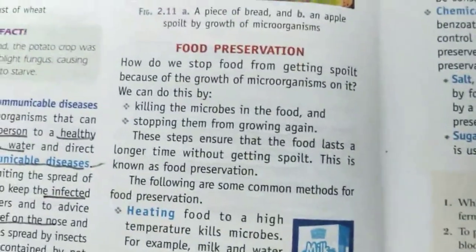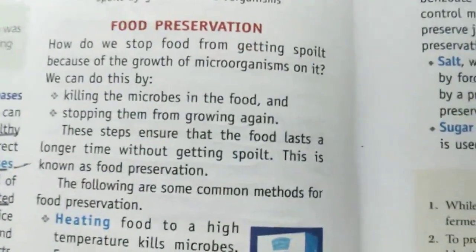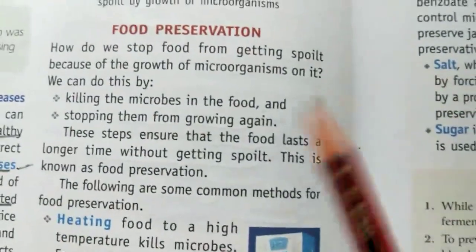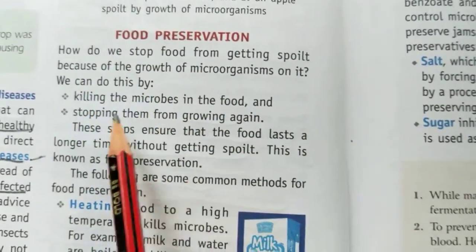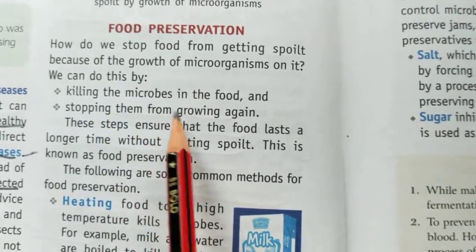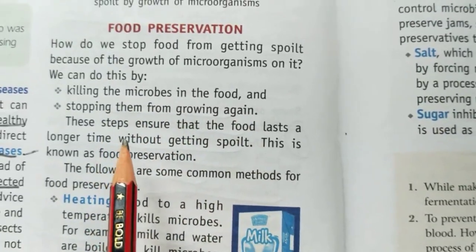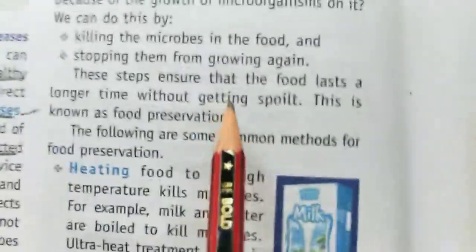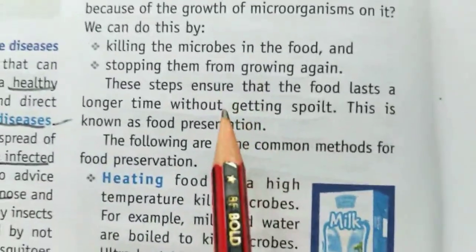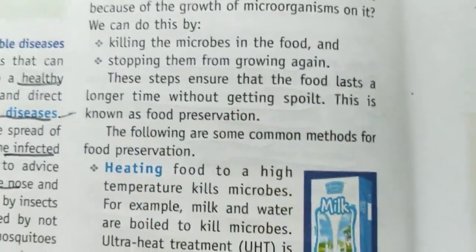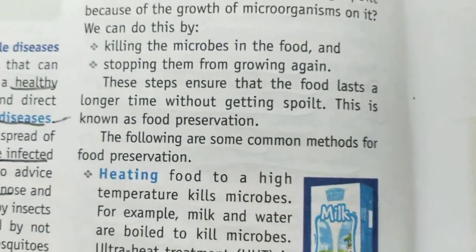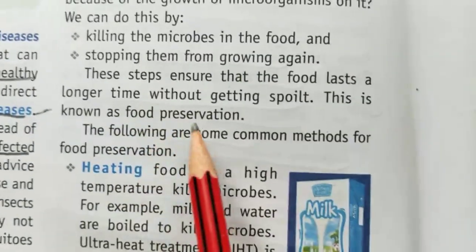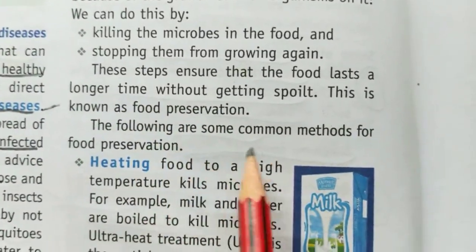Food preservation — how do we stop food from getting spoiled because of the growth of microorganisms on it? We can do this by killing the microbes in the food and stopping them from growing again. These steps ensure that the food lasts a longer time without getting spoiled. This is known as food preservation, and the following are common methods for it.